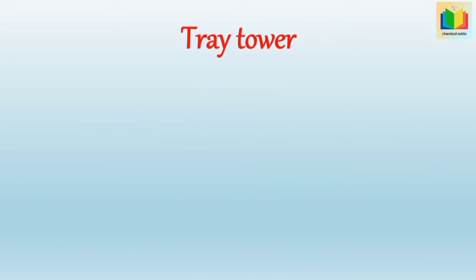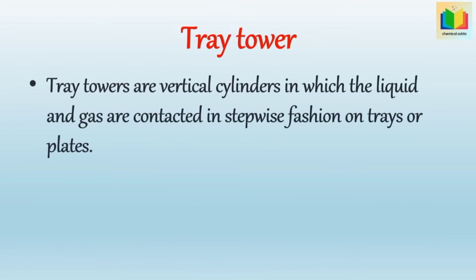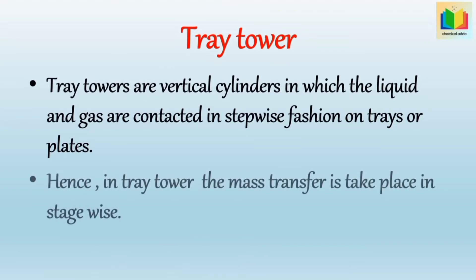Tray towers are vertical cylinders in which liquid and gas are contacted in a stepwise fashion on trays or plates. Each tray in a vertical column represents a stage, because on each tray the phases — gas and liquid — are brought into intimate contact. Then mass is transferred from one phase to another, and finally the phases are separated and leave the tray counter-currently to the adjacent tray. Hence, in the tray tower, mass transfer takes place in a stage-wise manner.